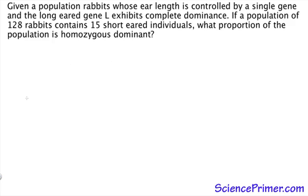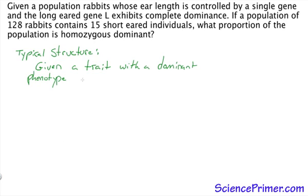So here we'll transition the question over to a page where we can work out the calculations and just do a bit of review on how to solve these problems. This question has the sort of typical Hardy-Weinberg structure, which is that we're given a trait that has a dominant phenotype, and we're also provided information about the structure of the population.